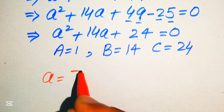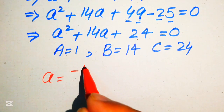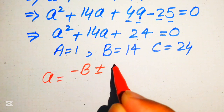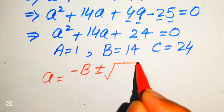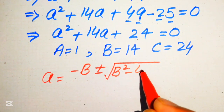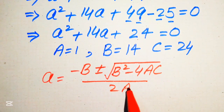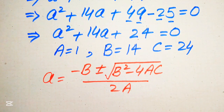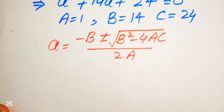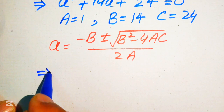The quadratic formula states: a = (−B ± √(B² − 4AC)) / (2A). We now substitute the values of A, B, and C into this formula.